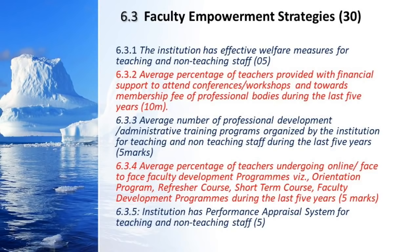It carries 30 marks and there are five metrics. 6.3.1 talks about welfare measures for the teaching and non-teaching staff. 6.3.2 talks about average percentage of teachers provided with financial support to attend conferences, workshops, and towards membership fee of professional bodies during the last five years. 6.3.3 talks about average number of professional development and administrative training programs organized by the institution.